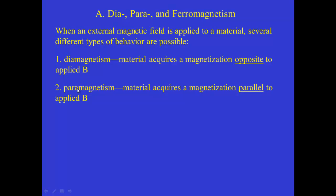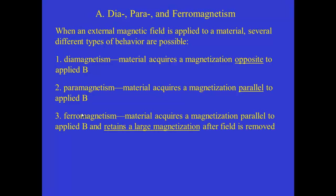Secondly, paramagnetism. Here the prefix 'para,' the same as in the word parallel, means along. In this case the material acquires a magnetization parallel to the applied magnetic field due to a reorientation of the internal magnetic dipole moments. And finally, ferromagnetism. You can think of ferromagnetism as a special case of paramagnetism, which is when an external magnetic field aligns the internal dipole moments, and so there's a magnetization acquired parallel to the applied field, but this magnetization stays in the material even after the field is removed.